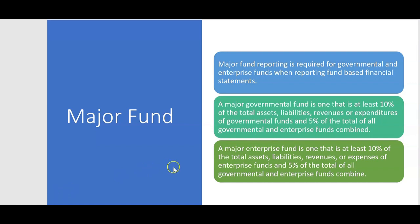What we're about to do might remind you of segment reporting, where there's a 10% test — and that's because it's very similar. A segment would be separately reported if it passes the 10% test: either 10% of assets or 10% of revenues. But with major funds in government, we actually include liabilities as well. So you could do the 10% test with assets, liabilities, revenues, or expenditures — for both governmental funds and enterprise funds.